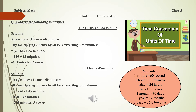Same method for part B: 3 hours and 45 minutes. As we know, 1 hour is equal to 60 minutes, so we multiply 3 hours by 60, which gives 180 minutes. Then we add 45 minutes to 180, and the answer will be 225 minutes.